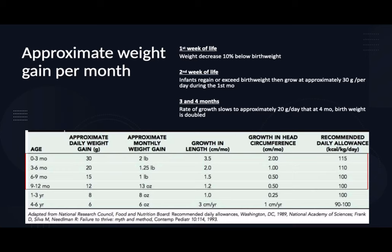After regaining birth weight, the infant increases by 30 grams per day during the first month. On the third and fourth months, the rate slows to approximately 20 grams per day, so that by four months old the baby's weight should double the birth weight. In the first three months, the baby requires higher calories — 115 calories per kg per day — compared to later months which require 100 to 110 calories per kg per day.